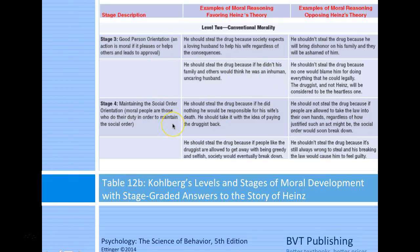Stage four is maintaining the social order orientation—moral people do their duty to maintain social order. In favor of Heinz: if he did nothing he would be responsible for his wife's death and should take the drug with the idea of paying the druggist back; or if people like the druggist are allowed to get away with being greedy and selfish, society would eventually break down.